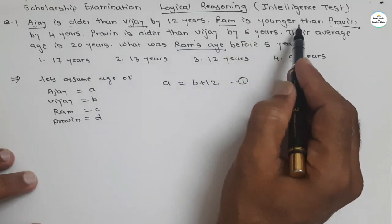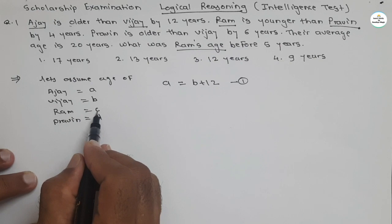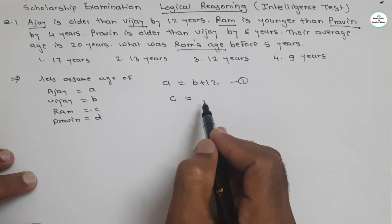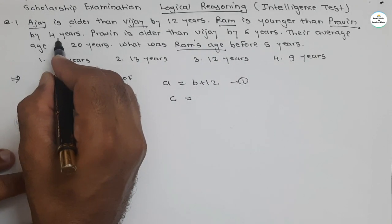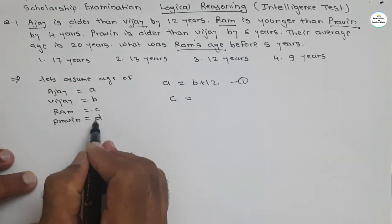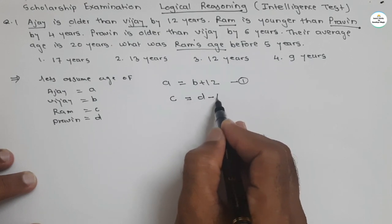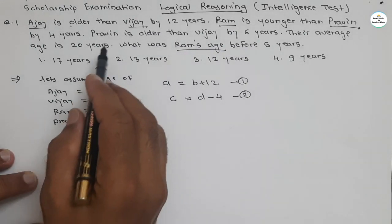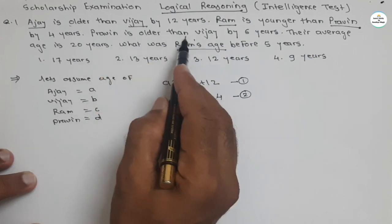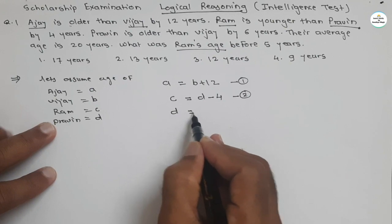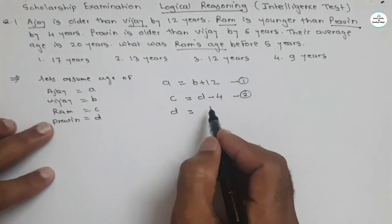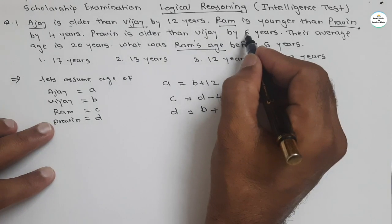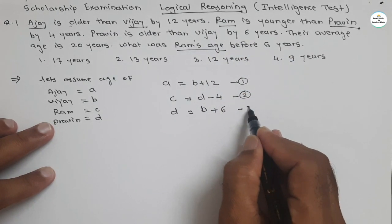Then, Ram is younger than Praveen — Ram means c. It is younger, meaning less than Praveen by 4 years, so Praveen is d, giving c = d − 4 as the second equation. Then the third equation: Praveen is older than Vijay — Praveen means d, Vijay means b — so d = b + 6. These are the three equations we get from the situation given in the question.